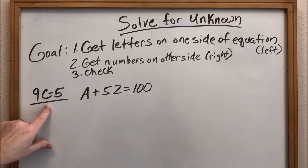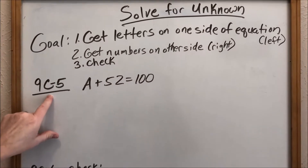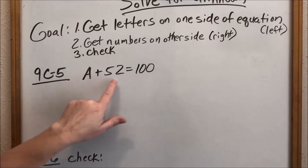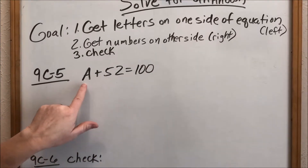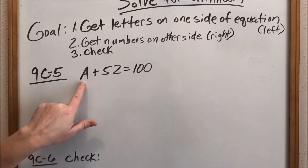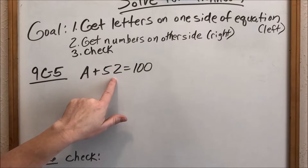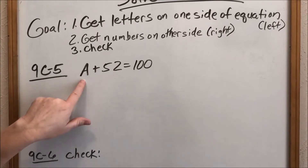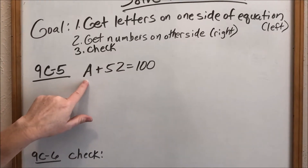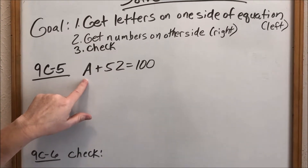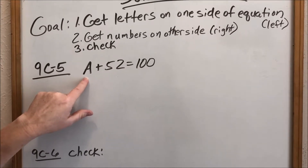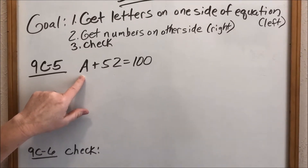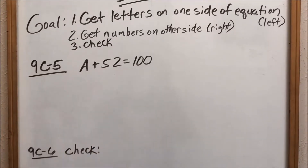We're going to be looking at 9C number five. Here we have A plus 52. You cannot add letters to numbers — you can only add letters to letters. You only add A's to A's, B's to B's. I like to say apples to apples, bananas to bananas, X's to X's, numbers to numbers.